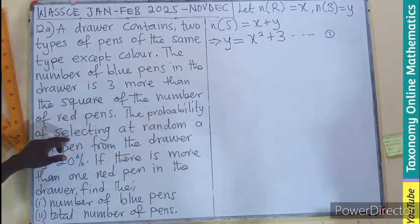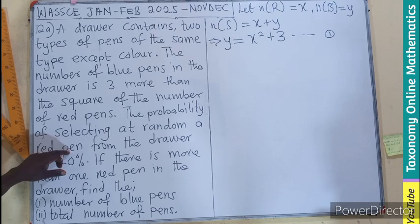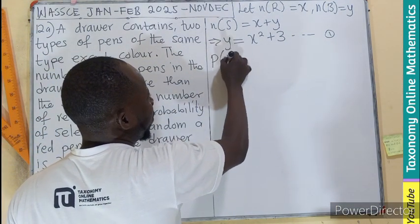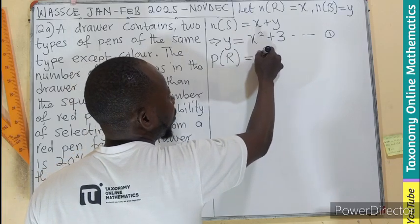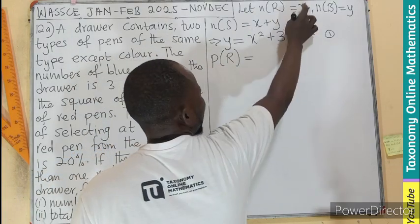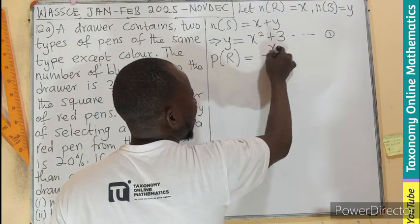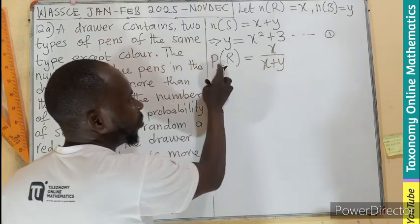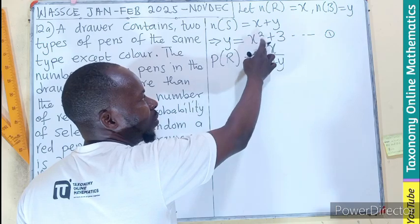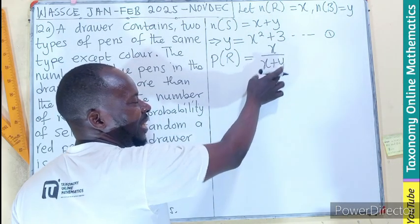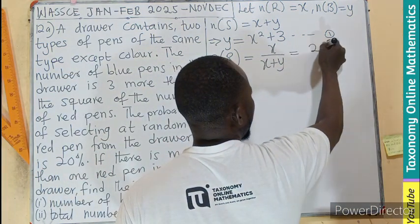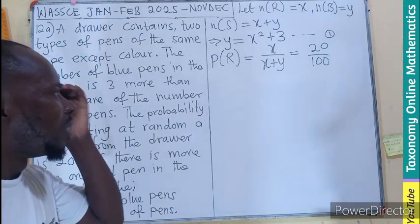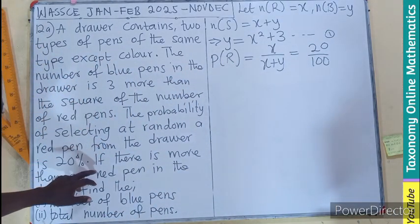Then the probability of selecting at random a red pen. Again, probability of selecting at random, we can say that the probability of red pen will be equals to the number of red, which is going to be X, divided by the total number, which will be X plus Y. Probability, the event over total event. This is equals to 20%. And 20% means 20 out of 100. So all those ended here.